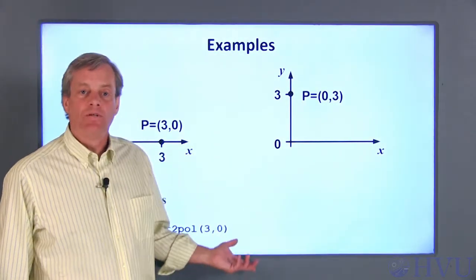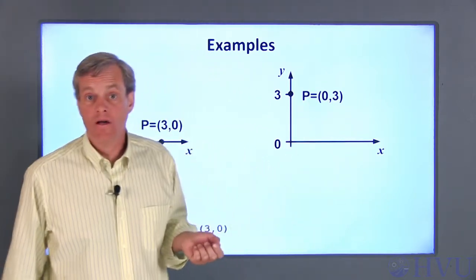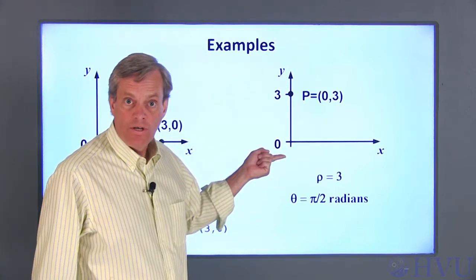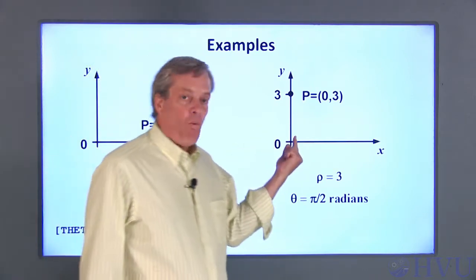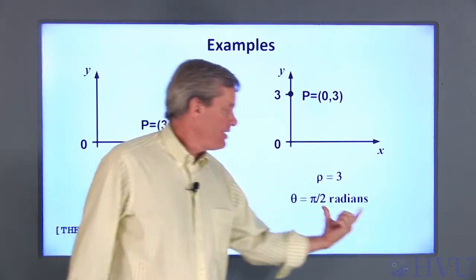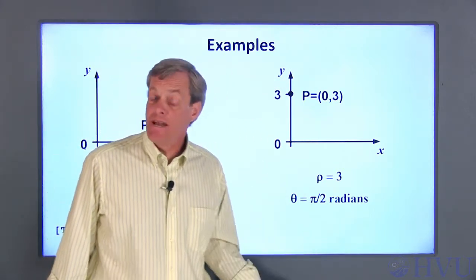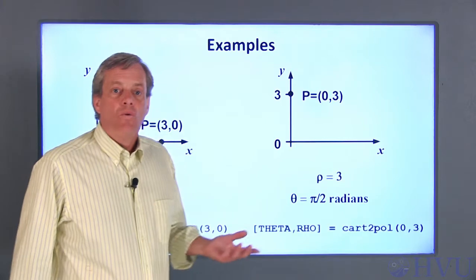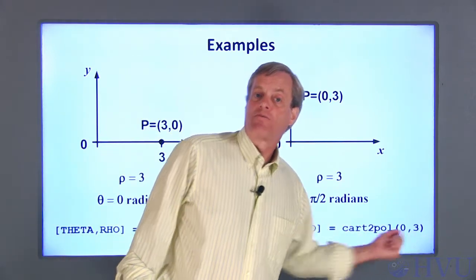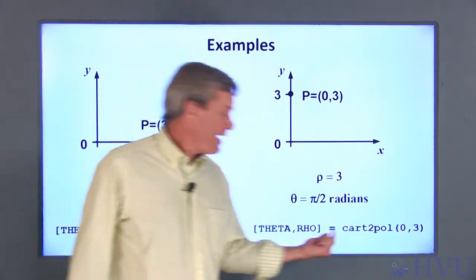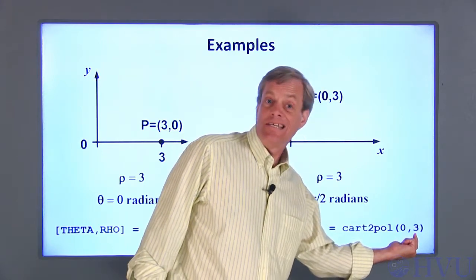In our second example, let's convert the Cartesian coordinates (0,3) to polar coordinates. The point is again 3 units from the origin, so we'd expect rho to be 3. Since the point is on the y-axis, we'd expect theta to be 90 degrees or pi over 2 radians. The cart2pol command returns angles in radians, by the way. We can use the MATLAB command theta comma rho equals cart2pol of 0 comma 3 to perform the conversion. Notice that the x-coordinate is still first in the input argument list, and the y-coordinate is still second.